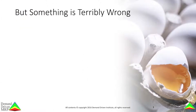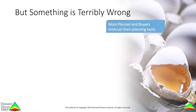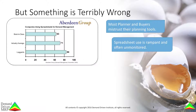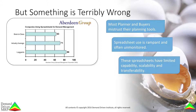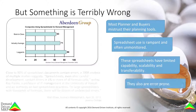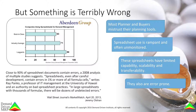But something is terribly wrong. The people that use MRP systems don't trust them. The use of spreadsheets to work around MRP calculations is rampant. Several studies have shown that on average, 70% of companies admit to using spreadsheets to augment or supplant the MRP planning equations, despite them having limited capability, scalability, and transferability. They are also error-prone, with nearly 90% of spreadsheets containing some form of error.